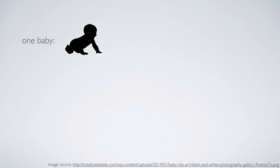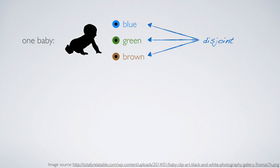Suppose there's one baby. The possible eye colors are blue, green, and brown. These outcomes are disjoint since they cannot happen at the same time.